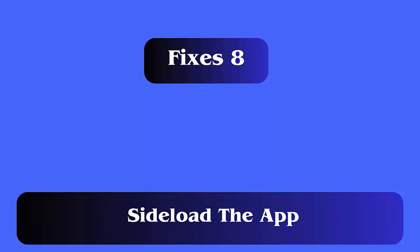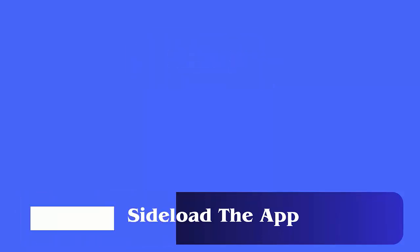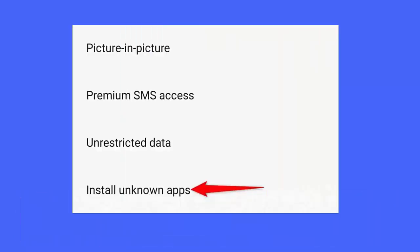Fix 8: Sideload the app. Sideloading is a way where you can download the app from a third-party source. First, go to Settings and choose Apps and Notifications. Now select Special App Access and then click on Install Unknown Apps. Next, click on the app file from a third-party store and install the app on your phone.